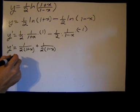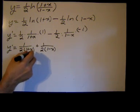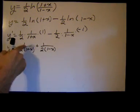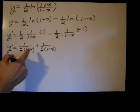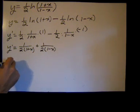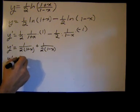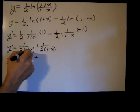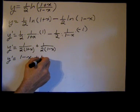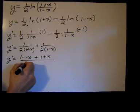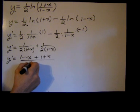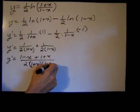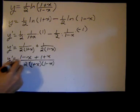I'll get a common denominator. Common denominator will be two times one plus x times one minus x. So over here, I need the quantity one minus x, so I'll get y prime equals one minus x plus, over here I'll need the quantity one plus x, one plus x divided by two times one plus x times one minus x.